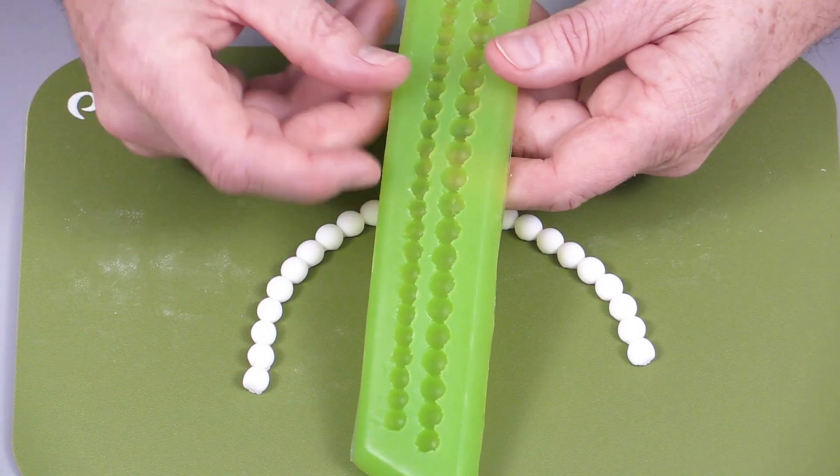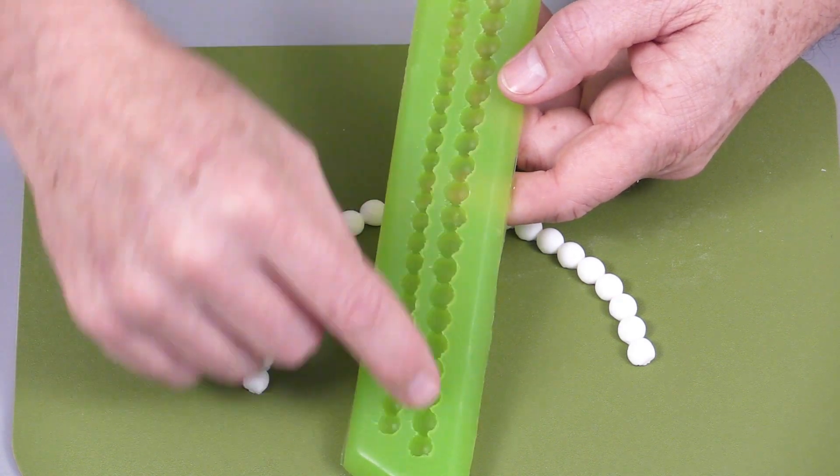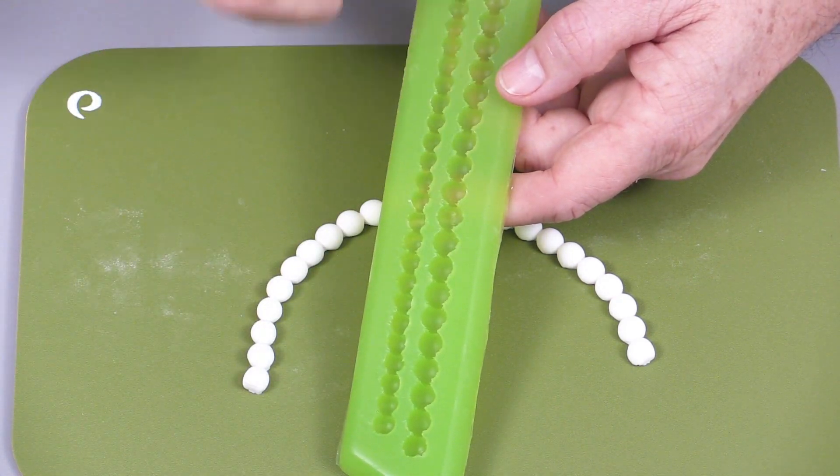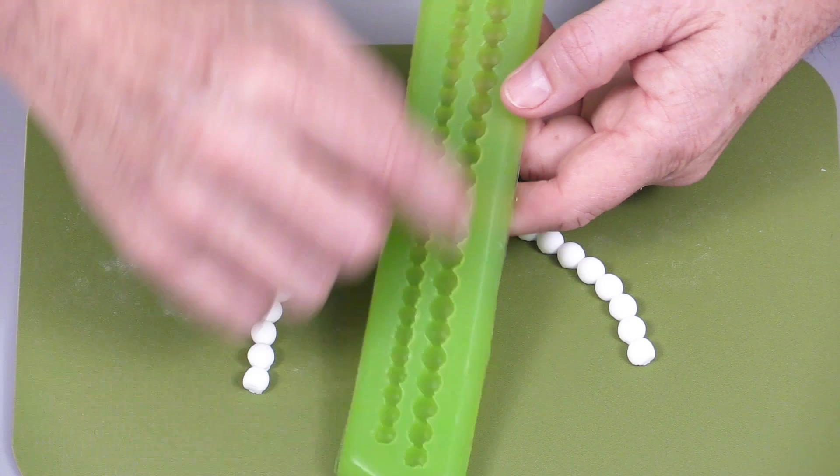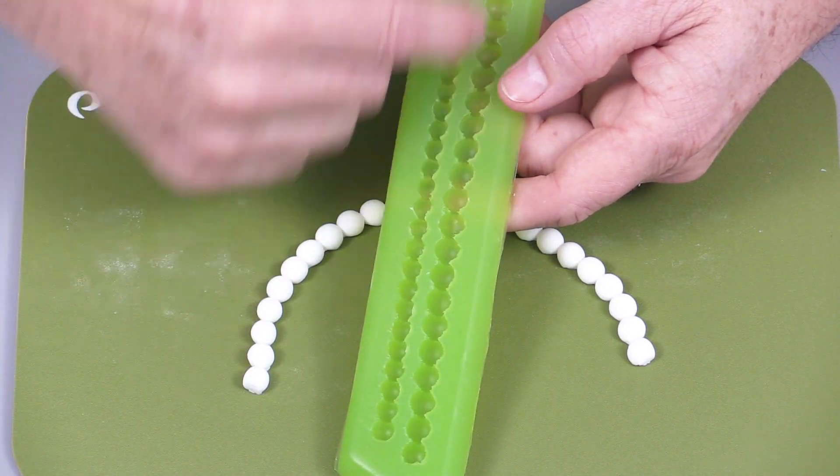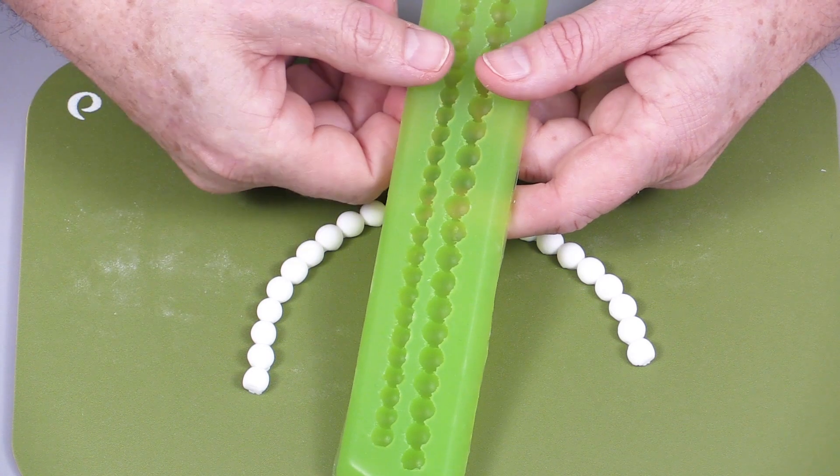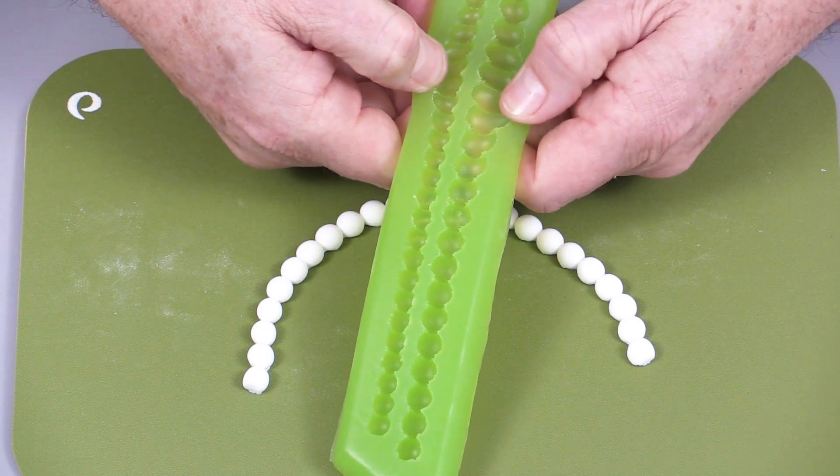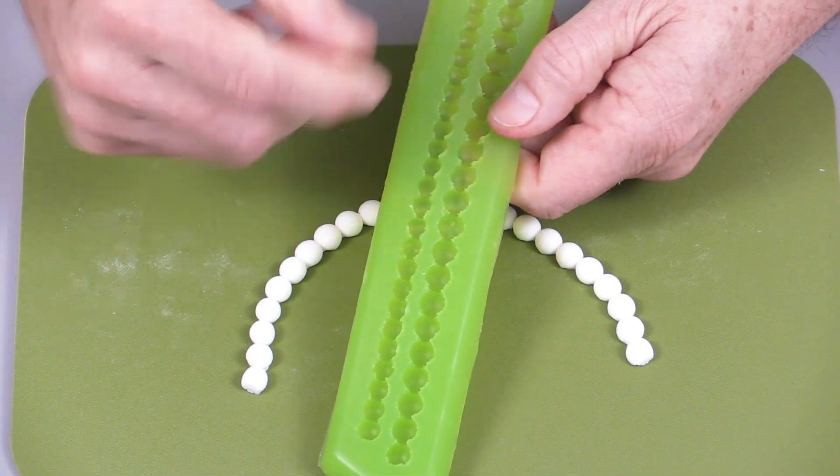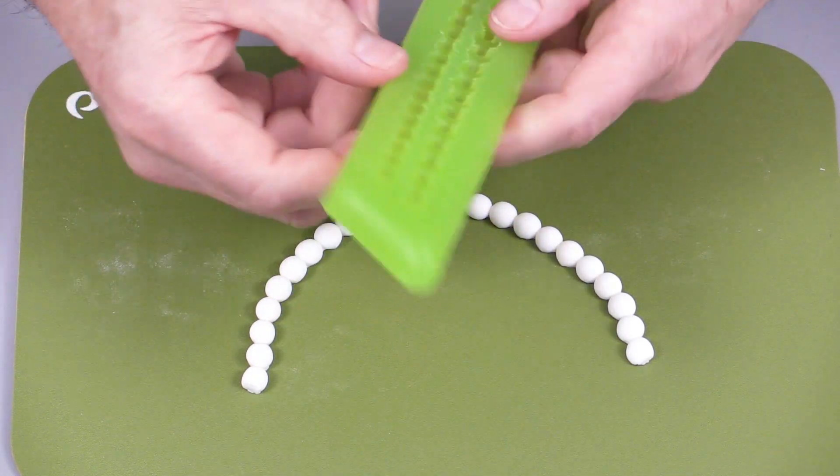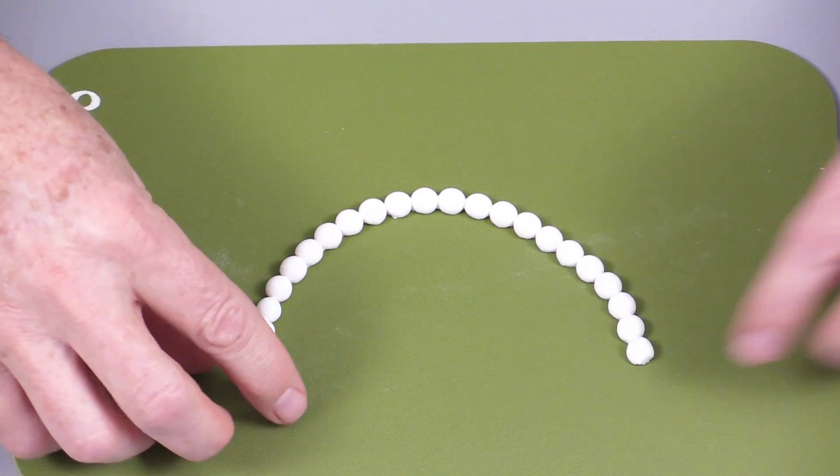I just paint them afterwards. Some instructors recommend putting pearl dust into the mold. I would advise against that because if you put pearl dust, gold dust, or any luster dust into the mold, you will not get rid of it. You might be doing black pearls and you don't want pearl dust on them. I always paint them after I take them out.